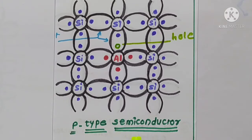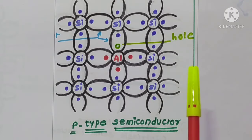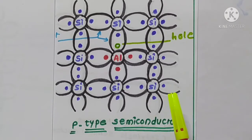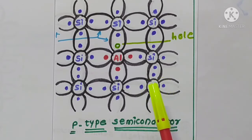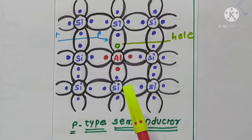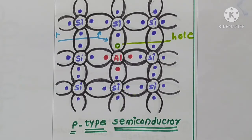Now let us see P-type semiconductors. Since germanium and silicon have 4 valence electrons, they are tetravalent. In P-type semiconductors, if a trivalent material is added to a pure semiconductor, the newly formed semiconductor is called P-type. Trivalent impurities are atoms with 3 valence electrons in the outermost orbit, for example, boron, aluminium, indium, and gallium. When such trivalent impurities are added to a pure semiconductor, the newly formed crystal is called P-type semiconductor.